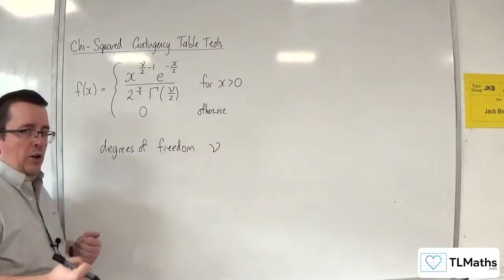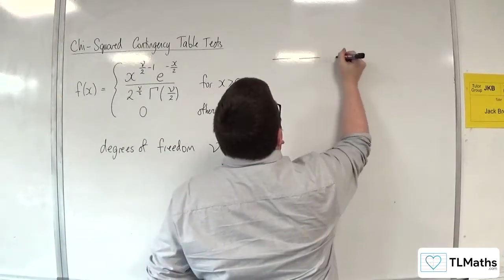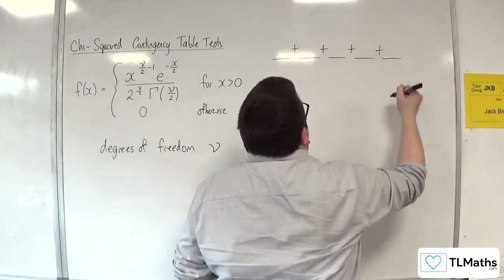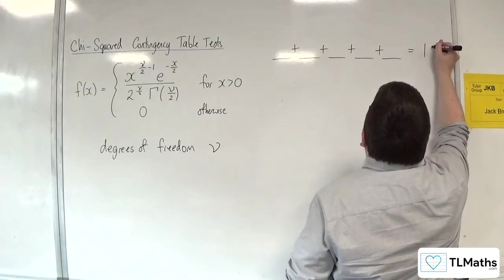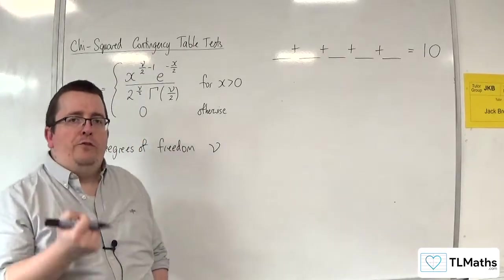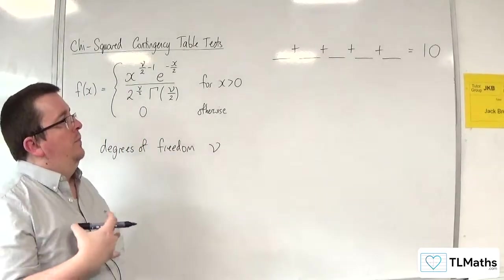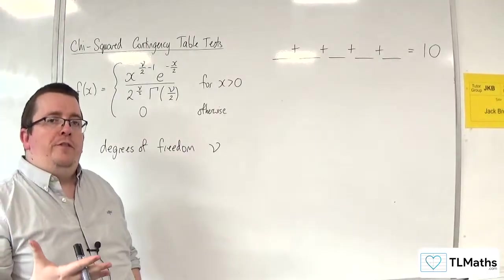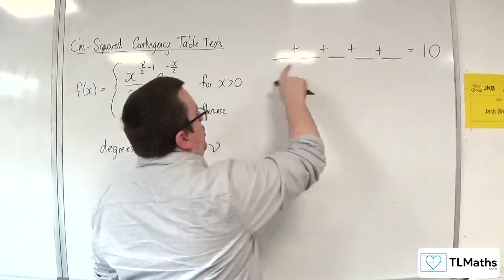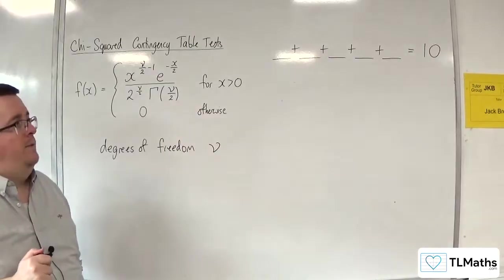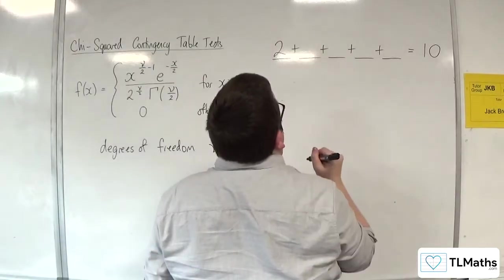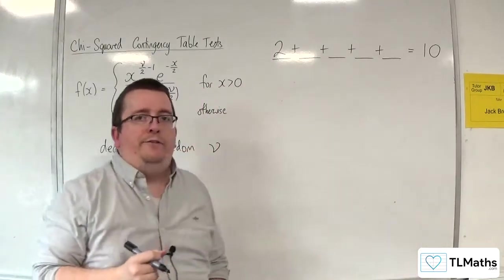If, let's say, I told you that there were five numbers, and these five numbers all add up to ten. Now, how many of those numbers would I have to tell you in order for you to be able to definitely say which numbers go where? So, let's say, for example, I put in two here. Can you fill in the remaining four numbers?